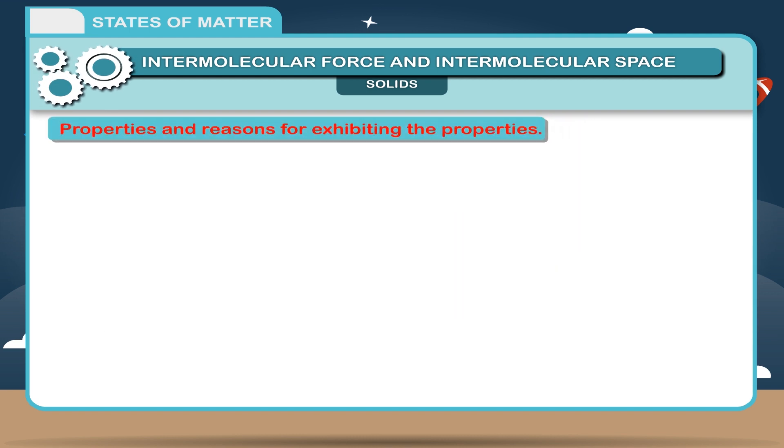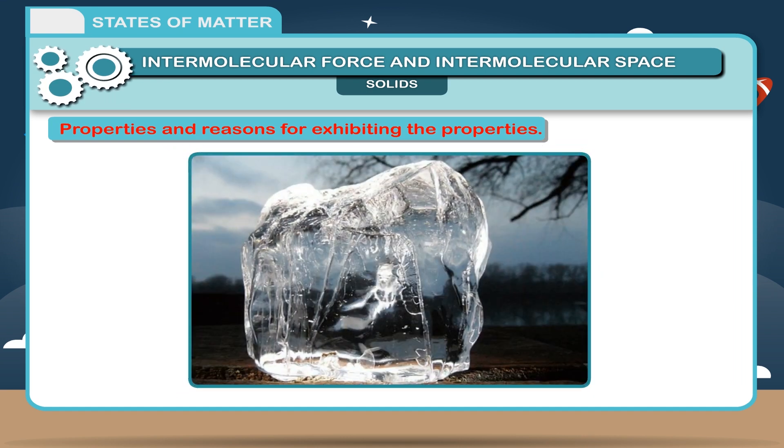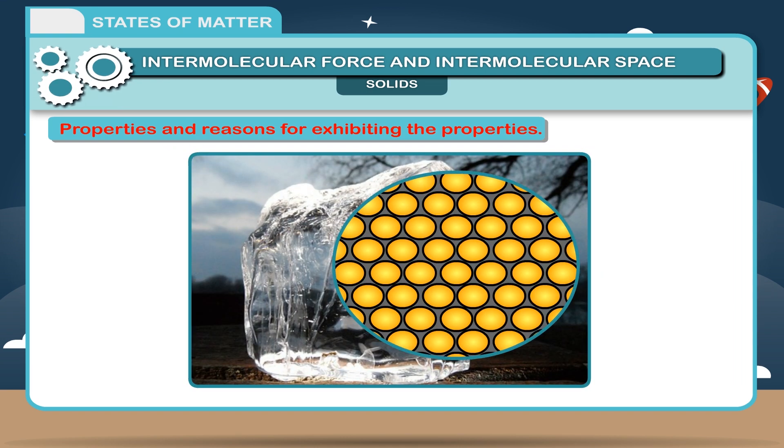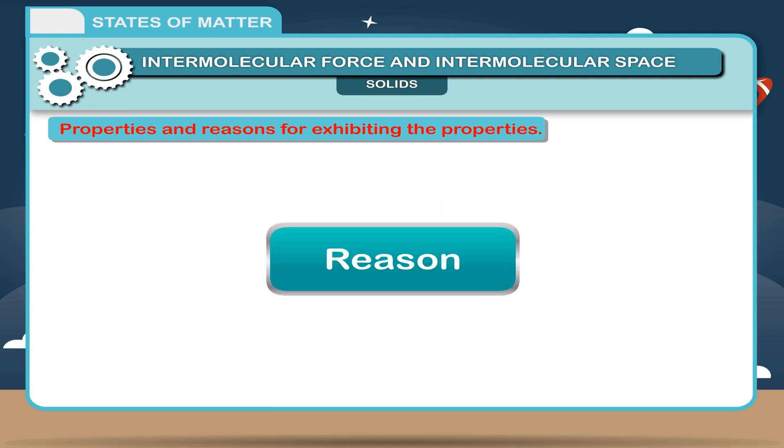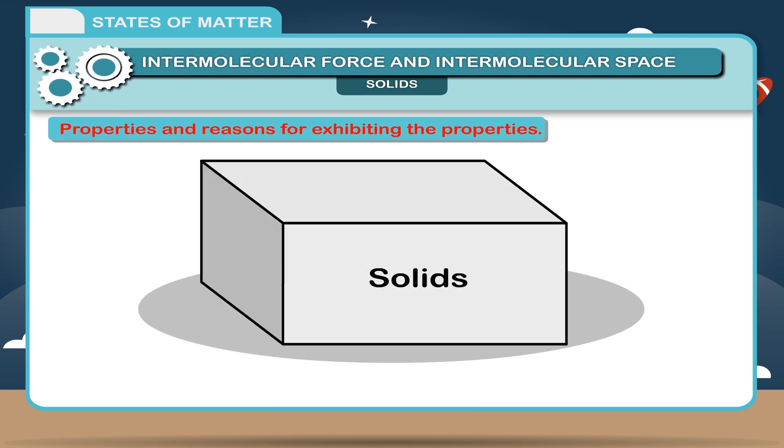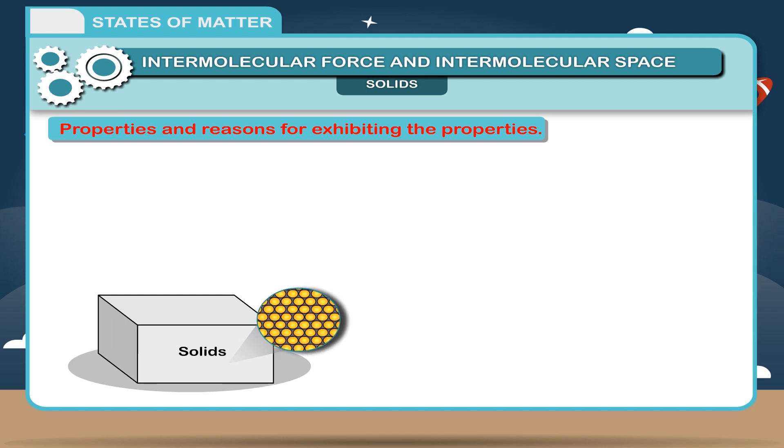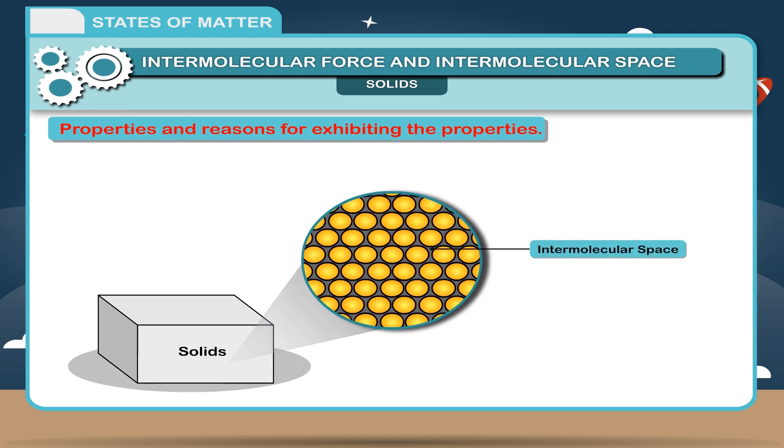Properties and reasons for exhibiting the properties. Solids have a definite shape and occupy a definite space. That is, solids have a fixed volume. Reason: Since molecules are closely packed in a solid, they have least intermolecular space and strong intermolecular force of attraction. They cannot move from their place, giving solids a definite shape and volume.